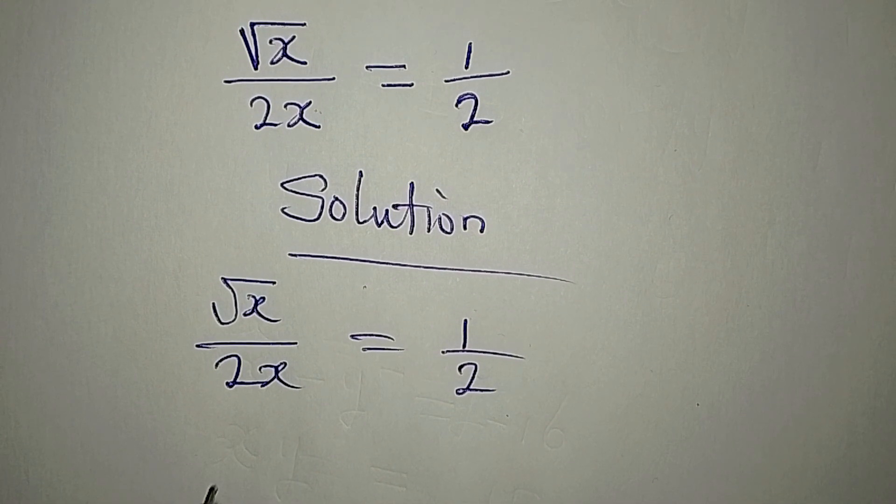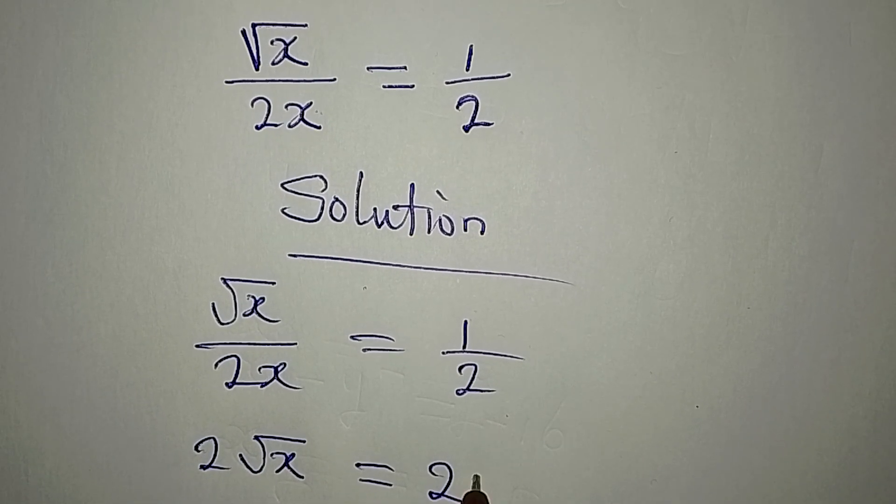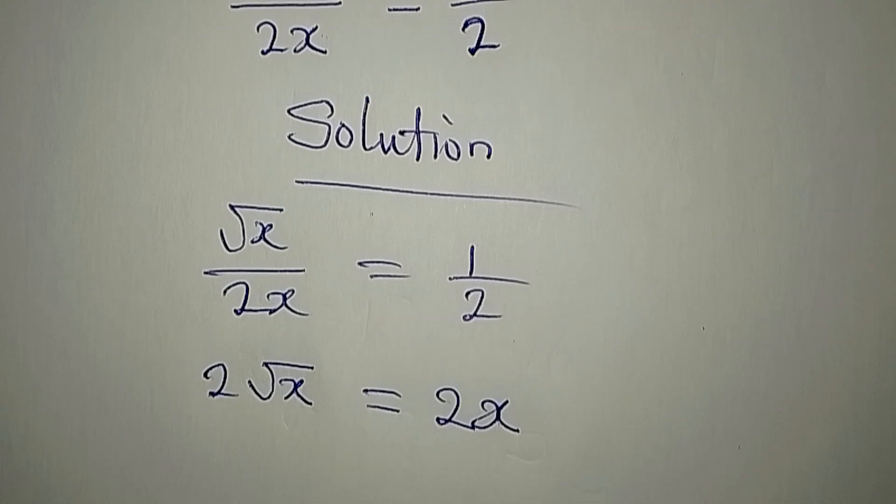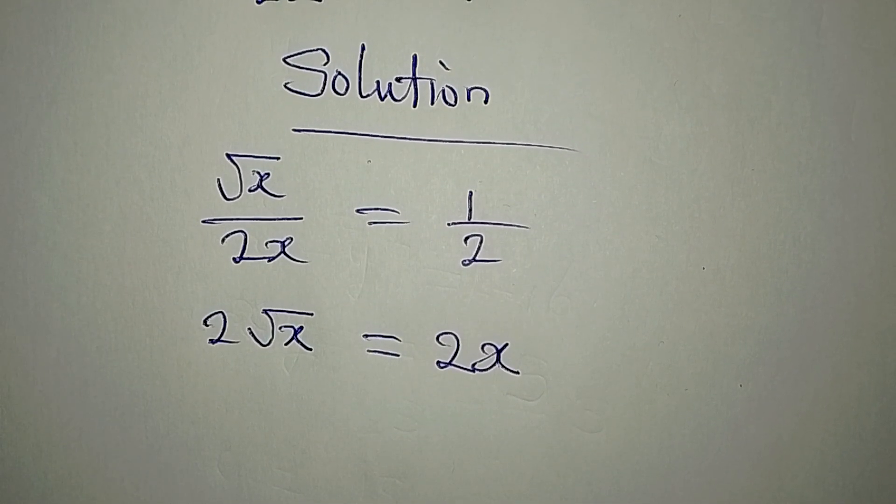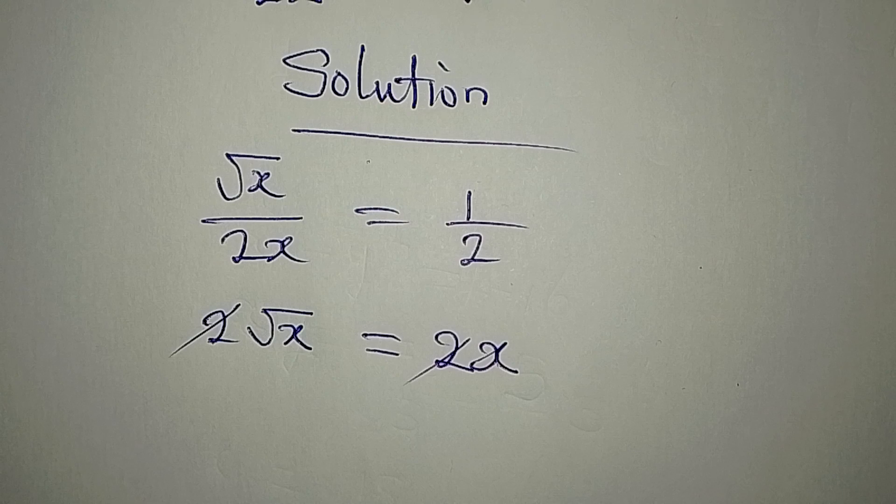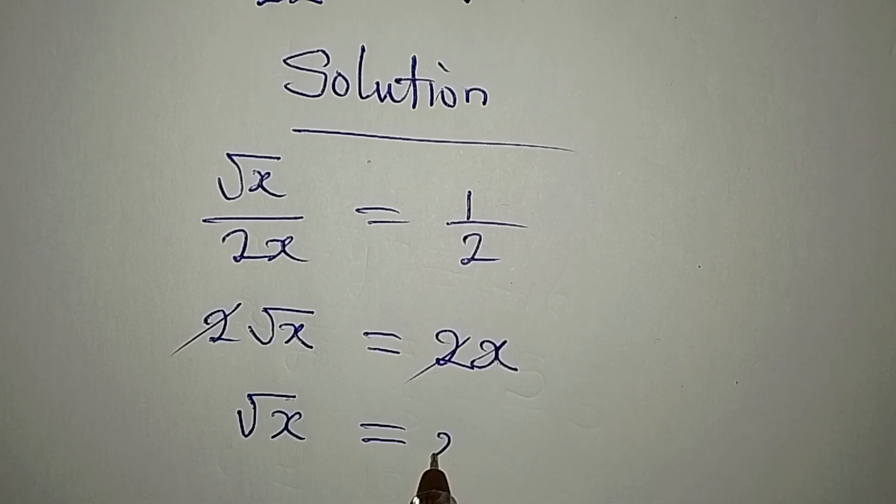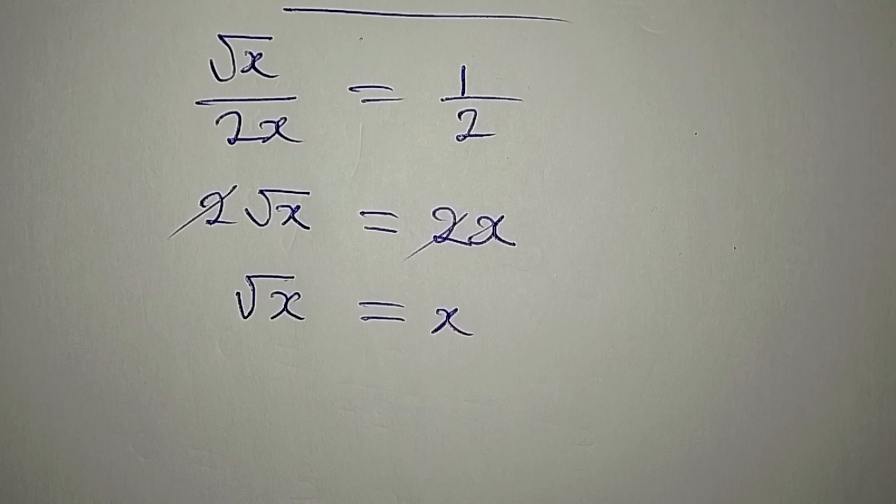So that 2 square root of x is equal to 2x times 1, and it's 2x. What can you observe? This and this can go, so that square root of x is equal to x.